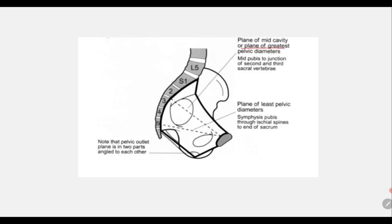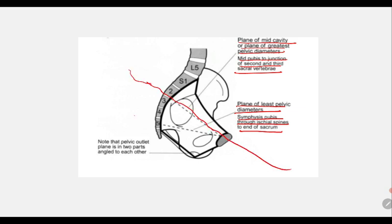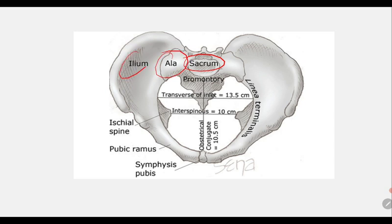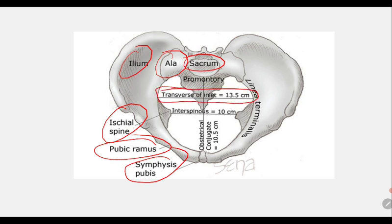The plane of greatest pelvic dimension (mid-cavity) passes through S2-S3 to the middle of the pubic symphysis. The plane of least pelvic dimension passes through S4-S5 to the lower pubic symphysis and through the ischial spines to the end of the sacrum. The transverse diameter of the inlet is 13.5 cm, the interspinous diameter is 10 cm, and the linea terminalis obstetric conjugate is 10.5 cm.